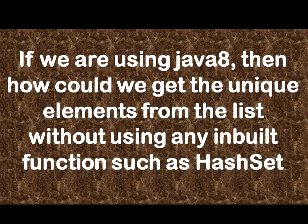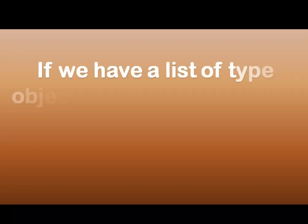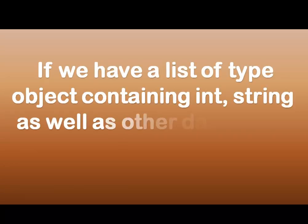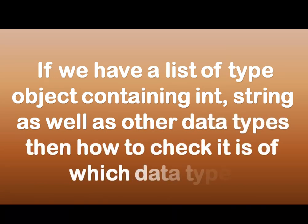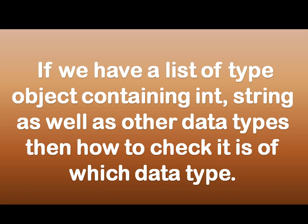The next question: if we have a list of type Object containing int, String, and other data types, how do we check which data type it is? Autoboxing comes into picture, and we can make use of the instanceof operator to determine the instance type.